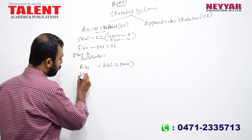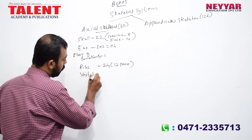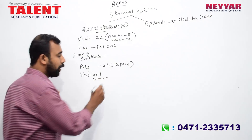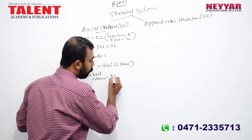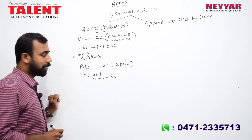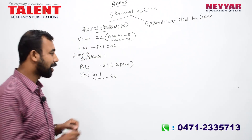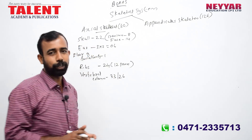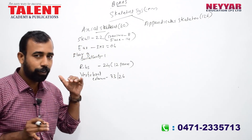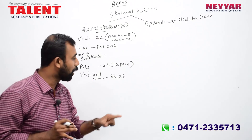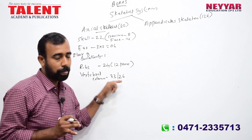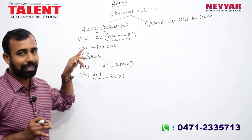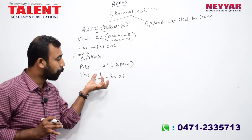The vertebral column, also called the backbone or spinal column, has 33 bones. However, because some bones are fused, the functional count is 26 bones. The vertebral column ranges between 33 and 26 depending on how fused bones are counted.